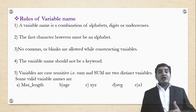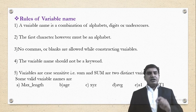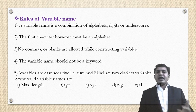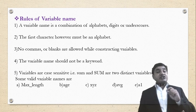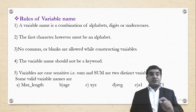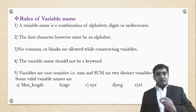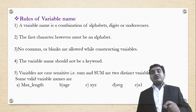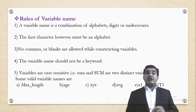These are the rules for constructing a variable name: a variable name is a combination of alphabet, digit, or underscore; the first character must be an alphabet; no commas or blank spaces are allowed; the variable name should not be a keyword; and variables are case sensitive. For example, if we declare a variable 'sum' in lowercase but use 'SUM' in uppercase in a logical or arithmetic operation, there will be an error — the variable will be undeclared.